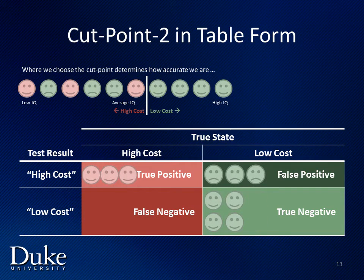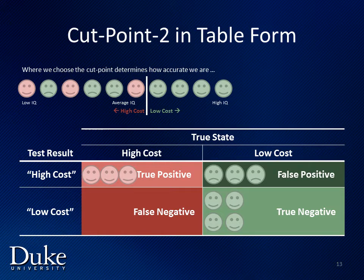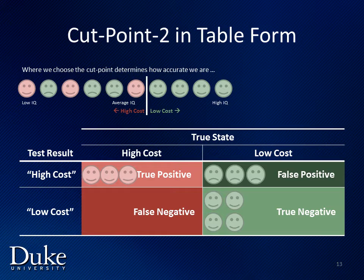With the second cut point, we correctly classify all high cost individuals, but we trade greater accuracy in true positives for less accuracy in classifying our low cost individuals. With the second cut point, we end up with three false positives and only correctly classify four of our low cost individuals.